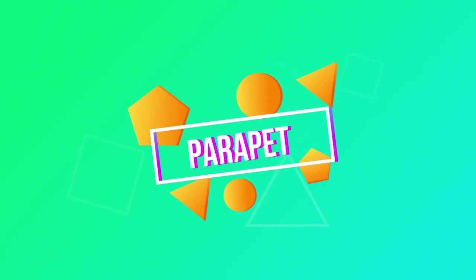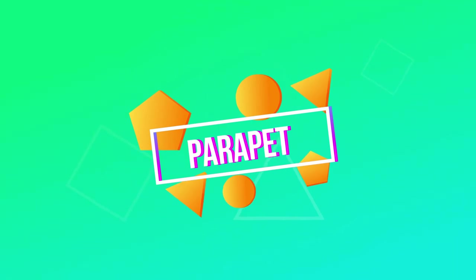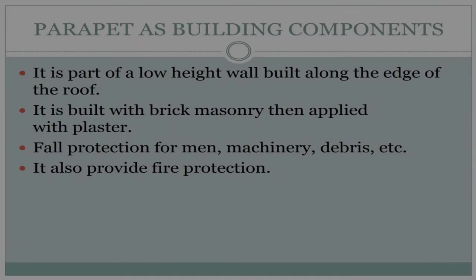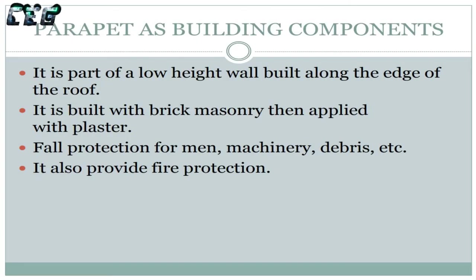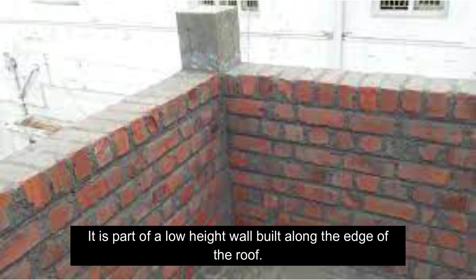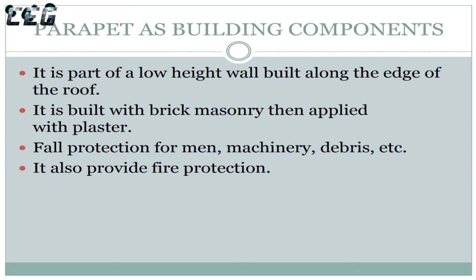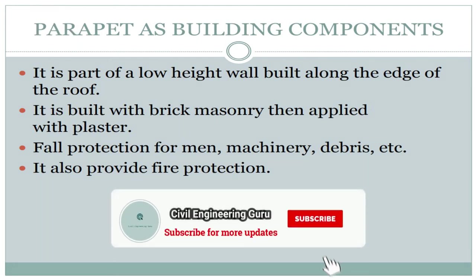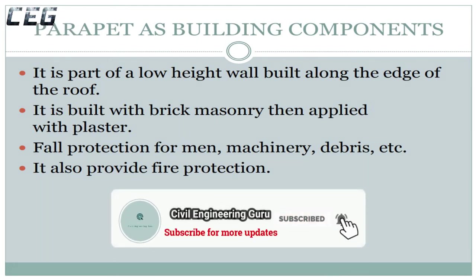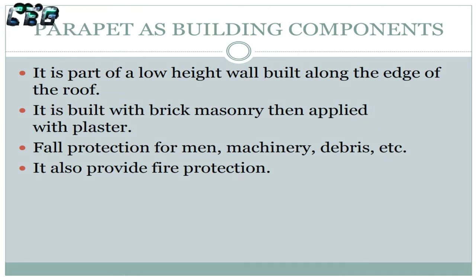Parapet: It is part of a low-height wall built along the edge of the roof. It is built with brick masonry then applied with plaster. It provides fall protection for men, machinery, debris, etc., and also provides fire protection.